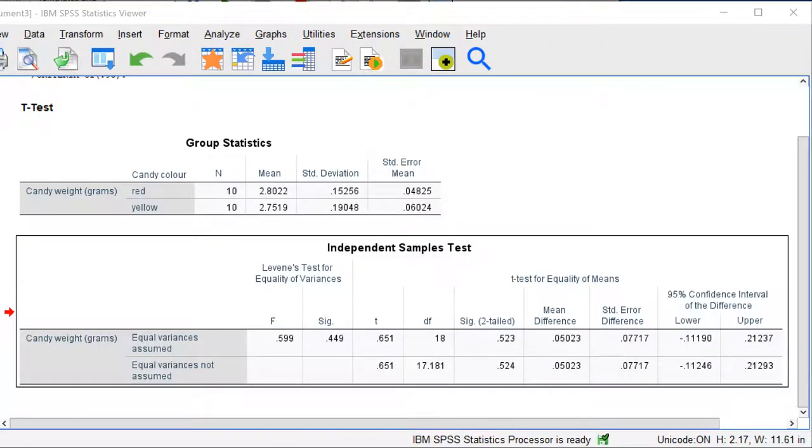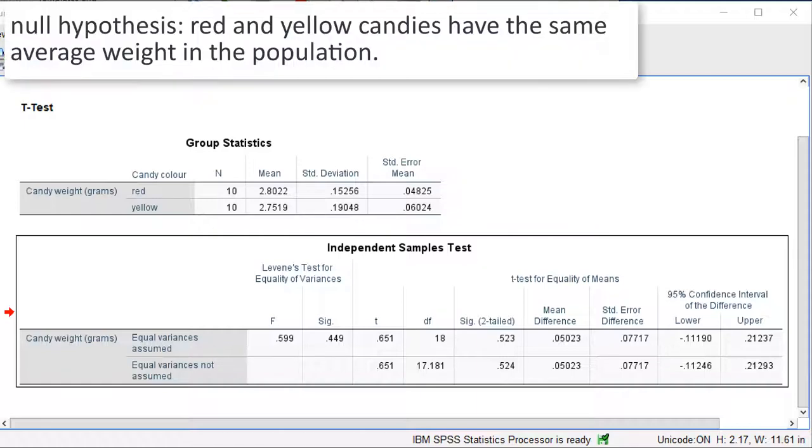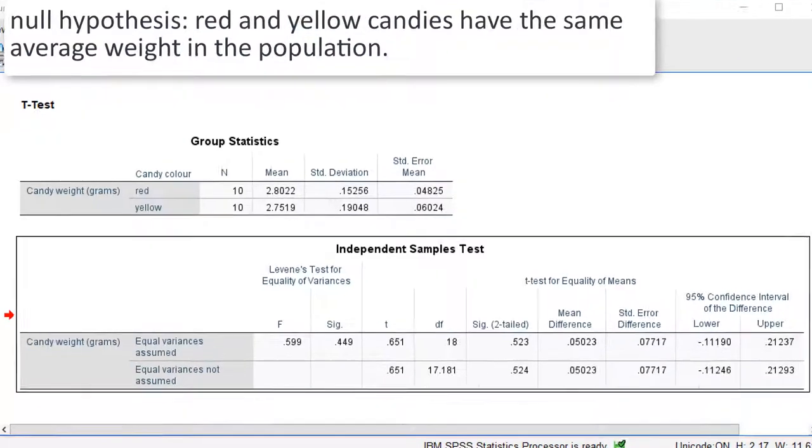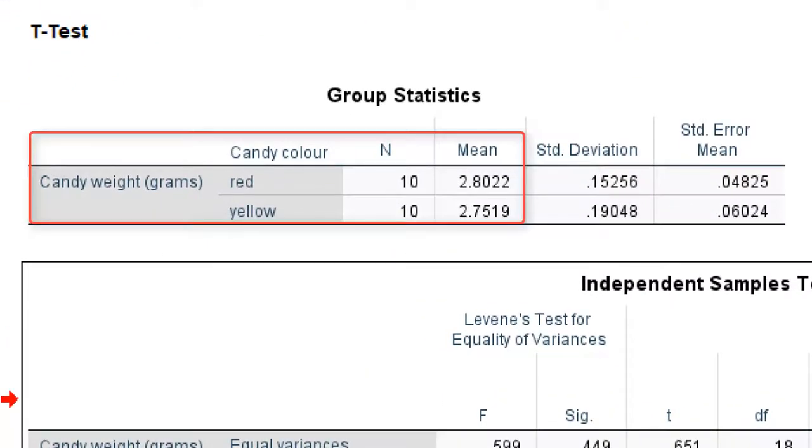Our last t-test is an independent-samples t-test. Now, we are testing the null hypothesis that red and yellow candies have the same average weight in the population. In other words, that the difference in weight is 0. In our sample, there is a slight weight difference between red and yellow candies. Red candies weigh on average 2.8 grams, whereas yellow candies weigh on average 2.75 grams.